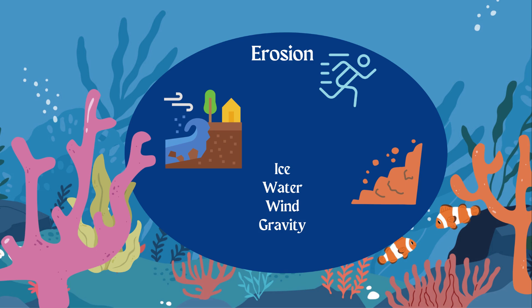Water erosion is going to be like a stream or a river carrying pieces — minerals and other pieces of rock and sand — from one place to another. Then we have wind erosion. Think about when you're standing on the beach and you feel the sand hitting you — that's an example of wind erosion because the sand is moving from one place to another. Anytime you're outside and there's wind and you feel small pieces hitting you, that's wind erosion.